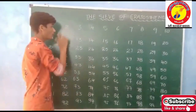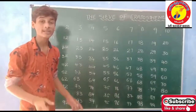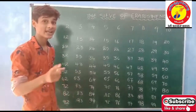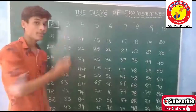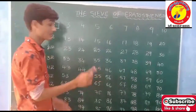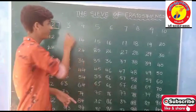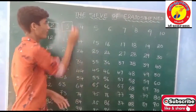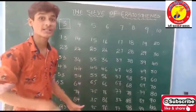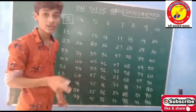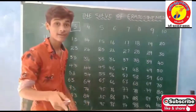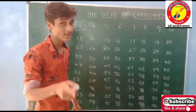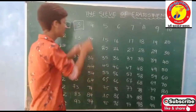Next, coming to 2 — 2 is a prime number because it is having only itself and 1 as its factors. Coming to 3 — 3 is also a prime number, because it is also having only itself and 1 as its factors. So it is a prime number.